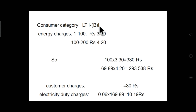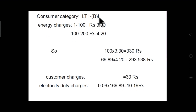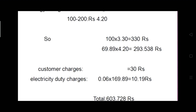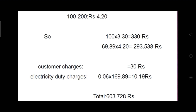Adding the consumption charge to the other compulsory charges: customer charge = 50 rupees (minimum charge for single-phase LT1B supply), electricity duty charge = 169.89 × 0.06 = 10.19 rupees. Combining consumption charges of 293.53 rupees with the 50-rupee customer charge and 10.19-rupee electricity duty charge, the total electricity bill comes to approximately 603.72 rupees for the month.